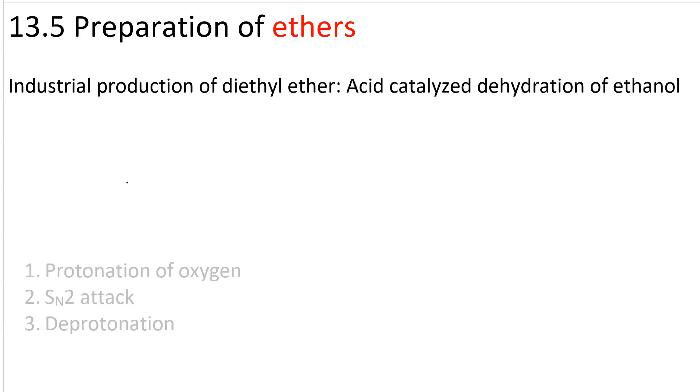For instance, if you take two equivalents of ethanol and you react it with concentrated sulfuric acid and heat, you get diethyl ether, or ethoxyethane. It's a three-step mechanism.